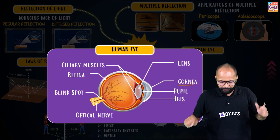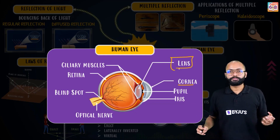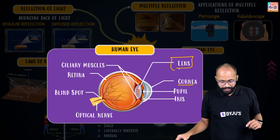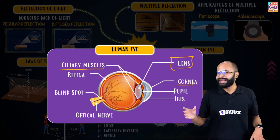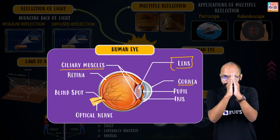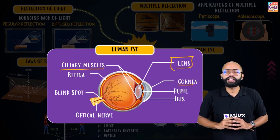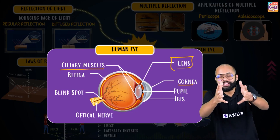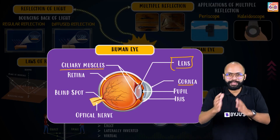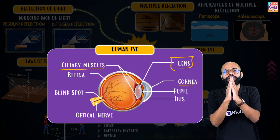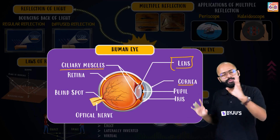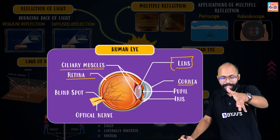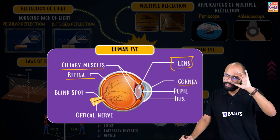Inside the eye we have the eye lens, which helps in forming the image by bending light. Then we have ciliary muscles — the eye lens is not a fixed lens; it can become thin or thick. The ciliary muscles control the shape and curvature of the eye lens: ciliary muscles contract to make the lens thick and relax to make it thin. This will be discussed at length in class 10th, but for now understand these basics.